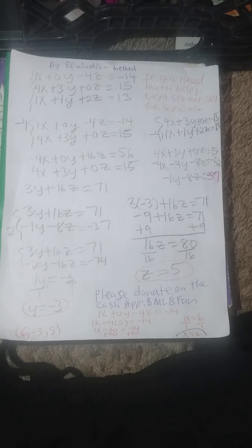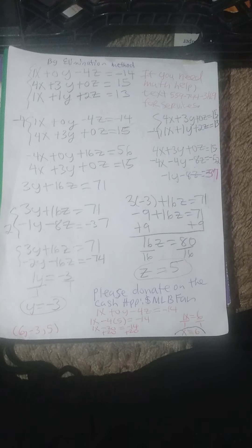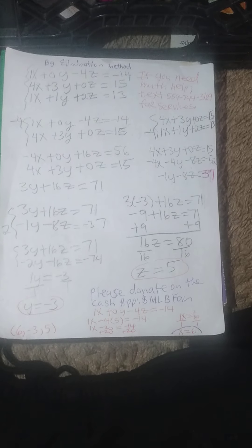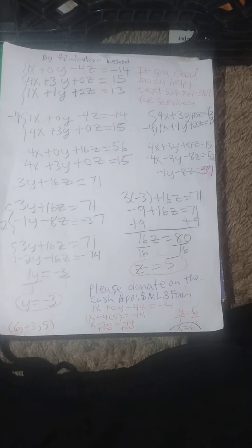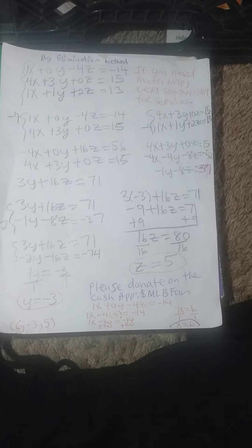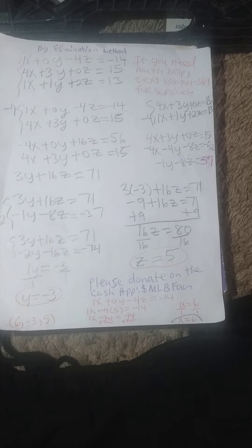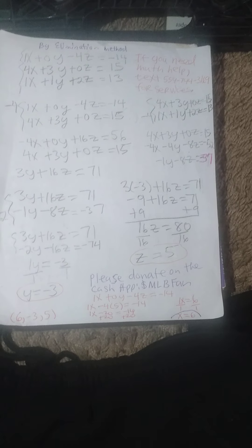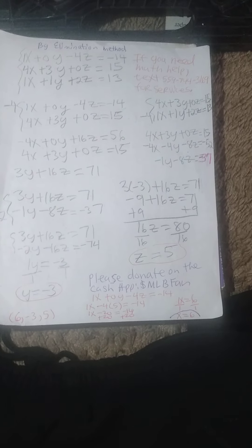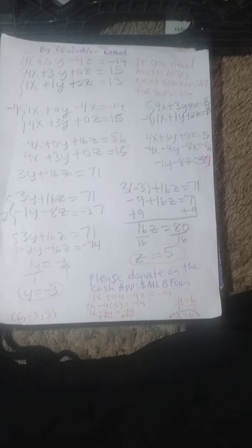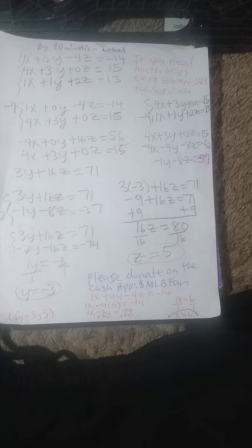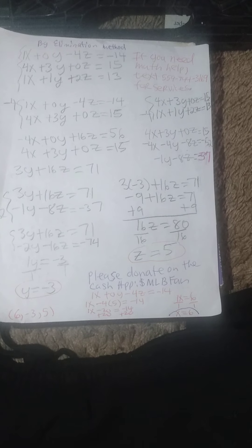Good morning, class. Today we are going to learn about linear systems of equations and solving them by the elimination method. Here we see a function of 1x plus 0y minus 4z is equal to negative 14, 4x plus 3y plus 0z is equal to 15, and 1x plus 1y plus 2z is equal to 13.